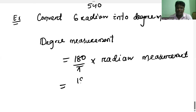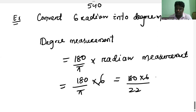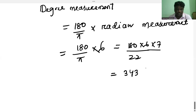We divide 180 by pi into the radian measurement. The radian value is 6. So we compute 180 into 6, divided by pi — which we take as 22 by 7. So that is 180 into 6 divided by 22 by 7. Computing this value gives us 343 and 7 by 11.